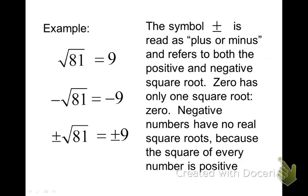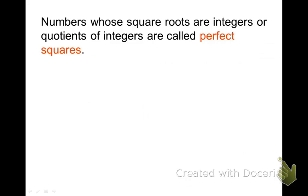Zero doesn't have a positive or a negative. Zero only has one square root. And we say that if you have a negative number, you can't take a square root because there aren't two numbers that you can multiply together to make a negative. A positive times a positive is a positive, and a negative times a negative is a positive.